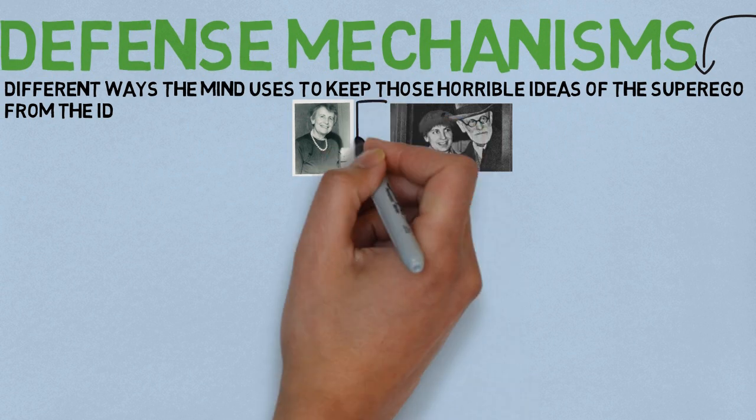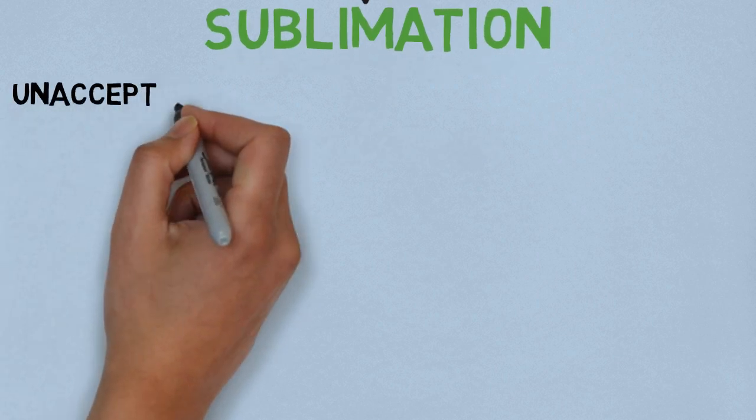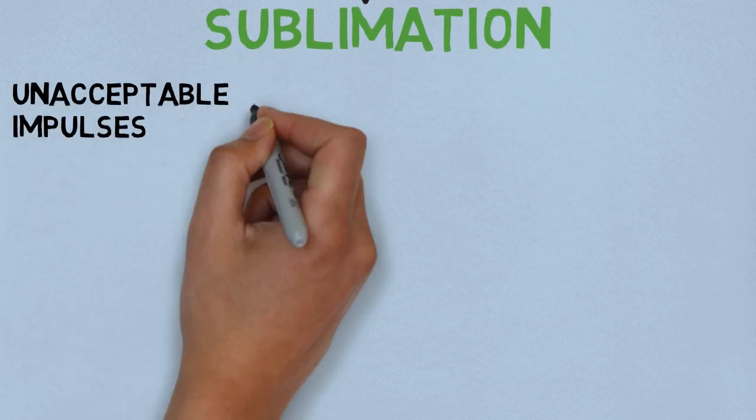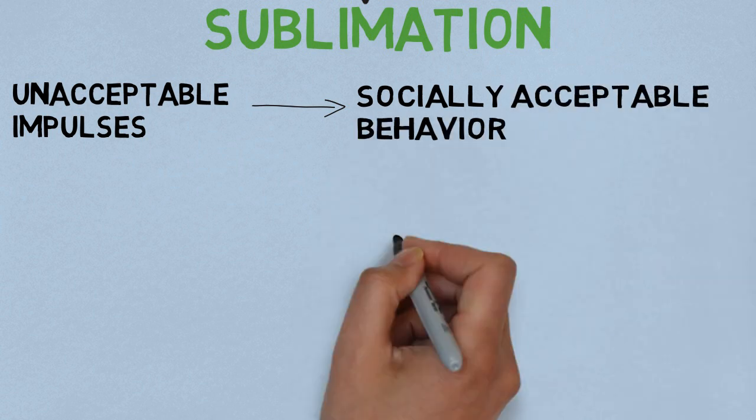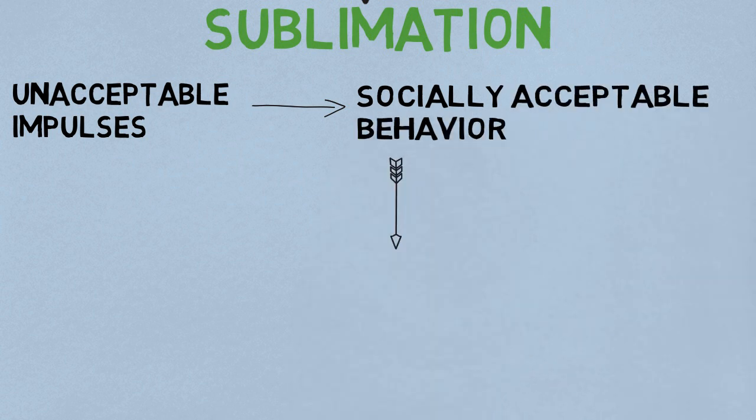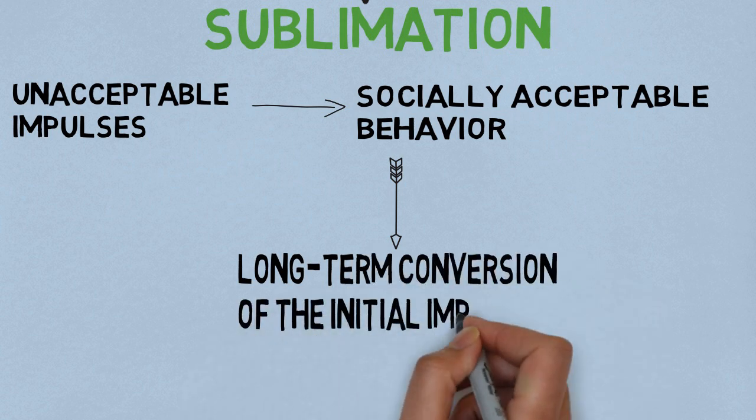Some of these defense mechanisms are sublimation, in which socially unacceptable impulses or idealizations are transformed into socially acceptable actions or behavior, possibly resulting in a long-term conversion of the initial impulse. You can imagine a great artist like Picasso turning his sexual or aggressive energy into his artwork.